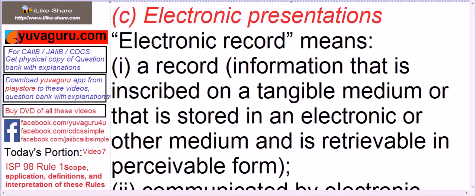For electronic records, there are two definitions — one is in ISP 98 and also one is in EUCP. You will always get confused between the two. So let's start for ISP. In EUCP, I have covered it in a separate video. For ISP, we are covering this now.